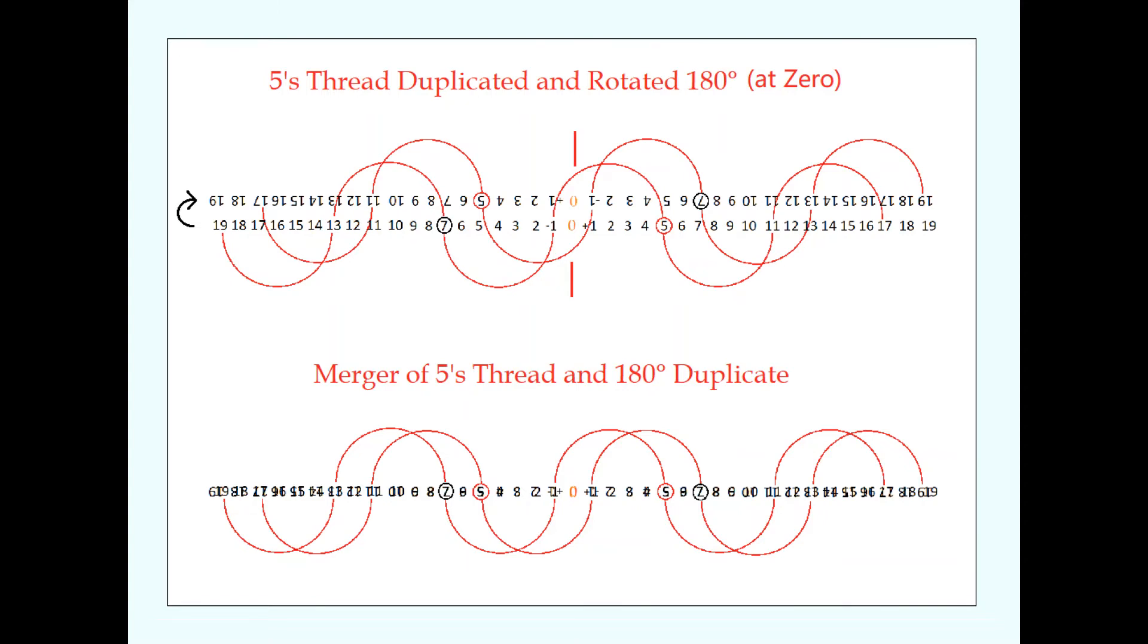You can see in the top image that the 7 circled in black on the left moves to the right-hand side of 0 into the location where it would normally be found. At the bottom of this image, you can see as 5's thread is duplicated and rotated, it combines with itself to create the same double helix as if 7's thread were still there. This poses an unusual question. Do these two threads exist independently from each other, or is one just a reflection of the other?